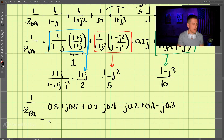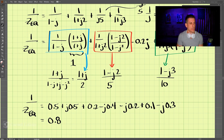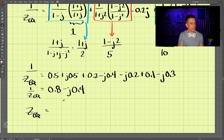Adding all these together: the real parts give us 0.5 plus 0.2 plus 0.1, which is 0.8. For the imaginary parts we have 0.5 minus 0.4 minus 0.2 minus 0.3, which gives negative 0.4. So 1 over Z equivalent equals 0.8 minus j0.4.